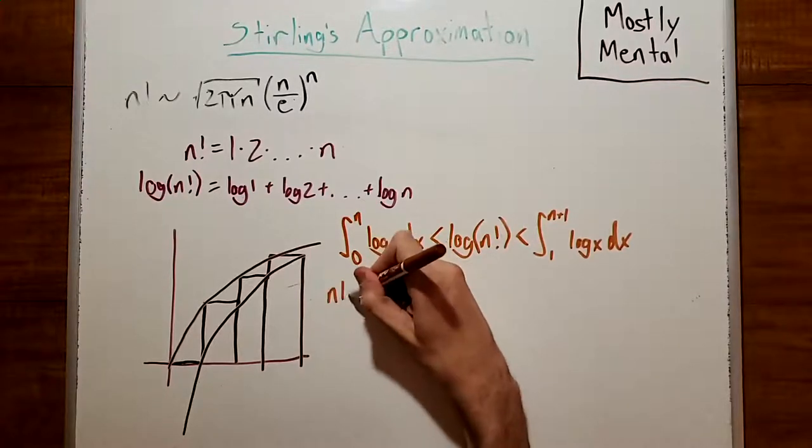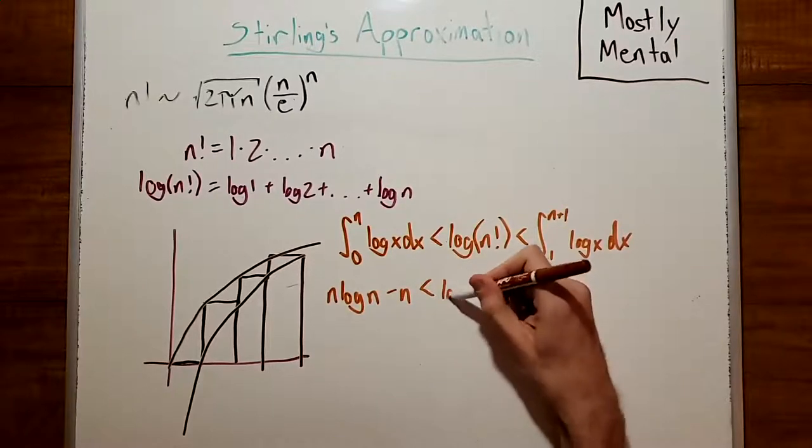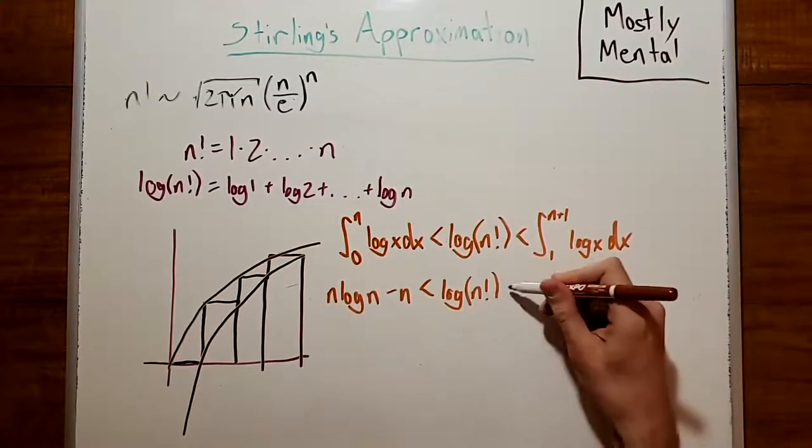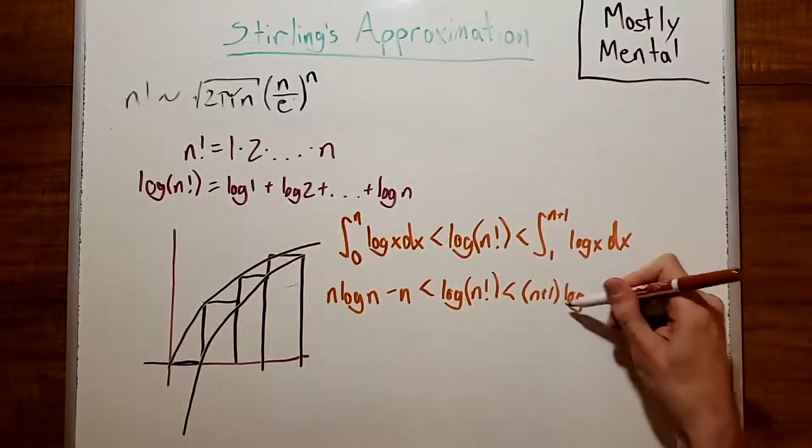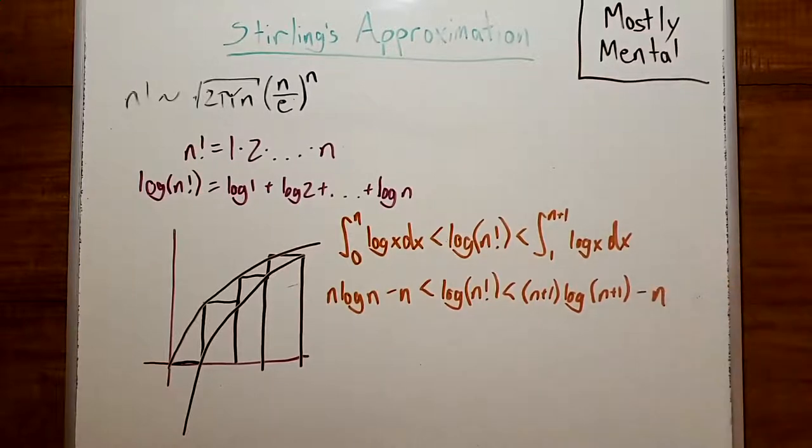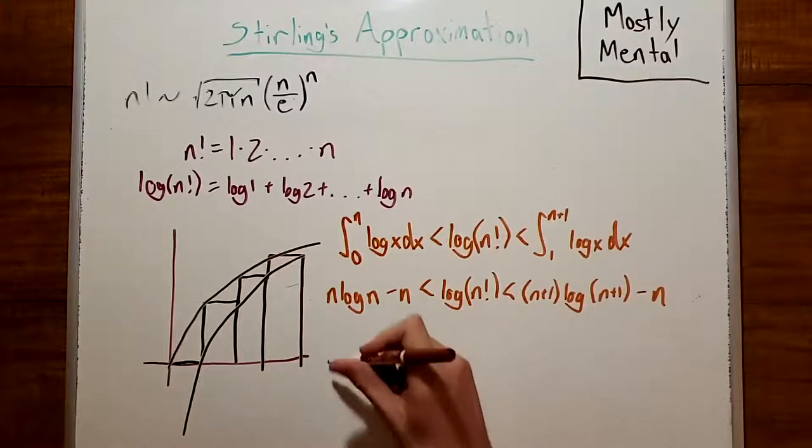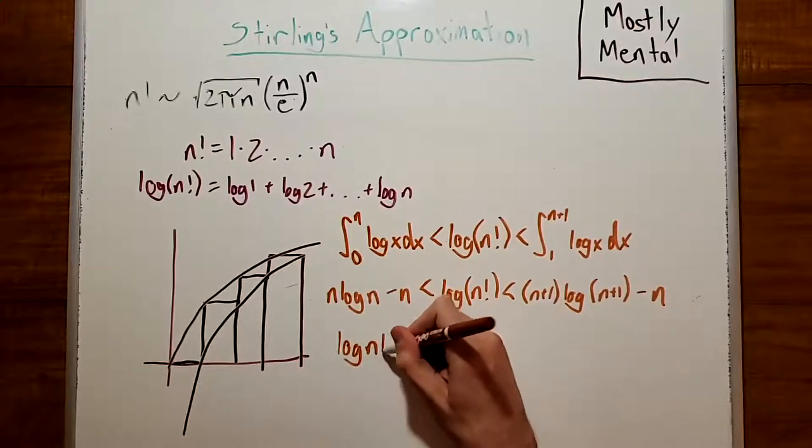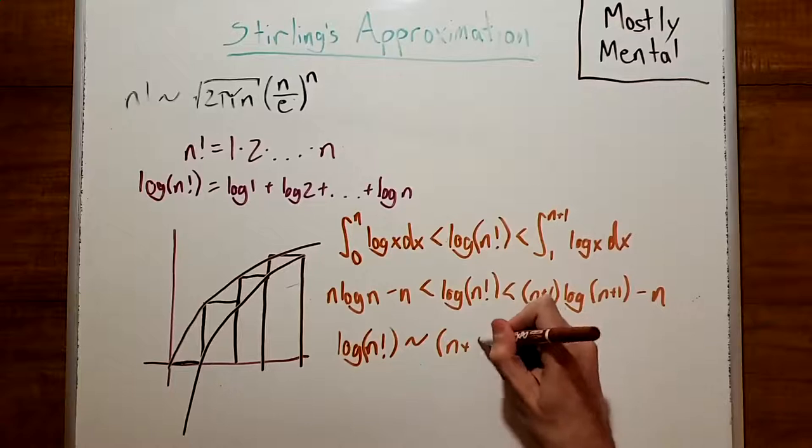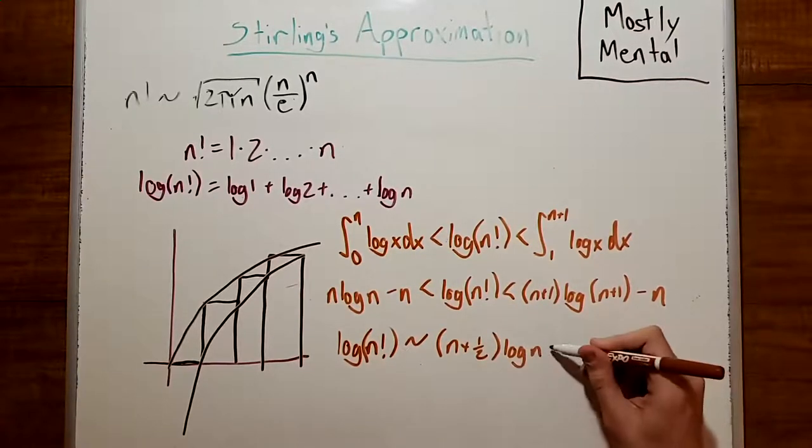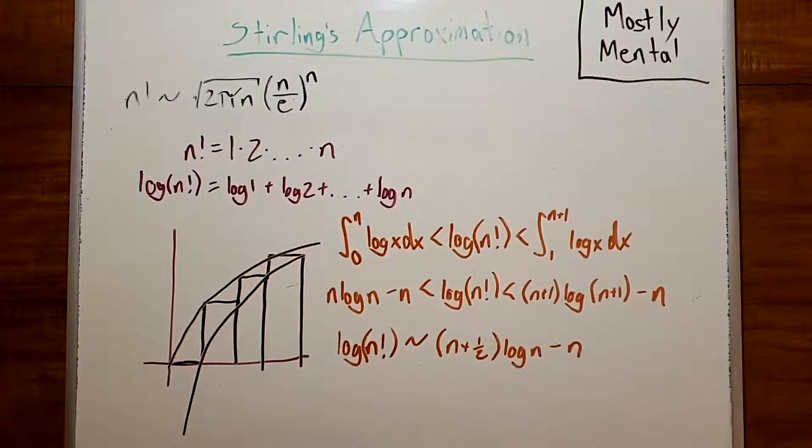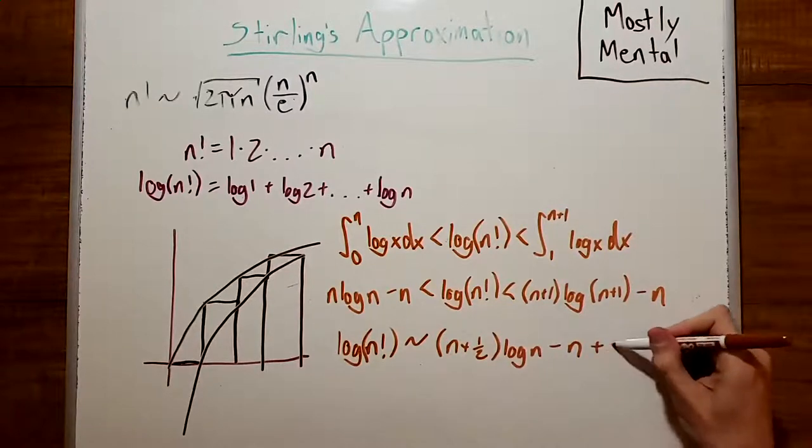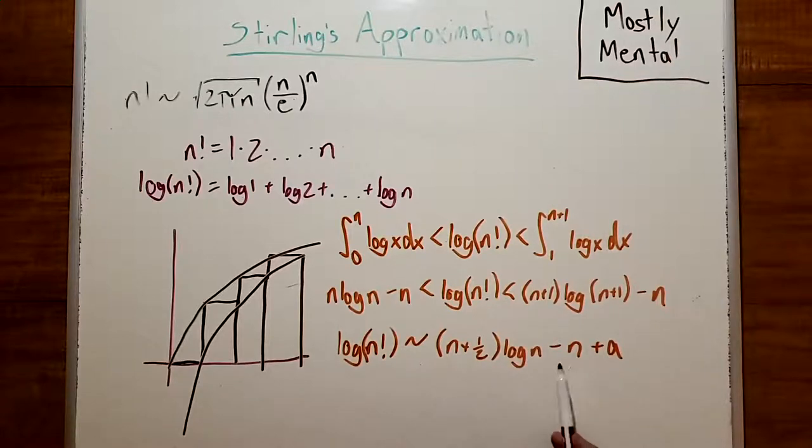Evaluating, we get n log n minus n is less than log of n factorial, which is less than n plus 1 log n plus 1 minus n. And so, we should expect that the log of n factorial is going to be about halfway between these. So, it's going to be something to the effect of n plus 1 half times log of n minus n. And I'll skip the details. There's a full paper in the description. But it's going to be that within a constant. So, it's going to be n plus 1 half log n minus n plus some constant plus some thing that's too small to matter.